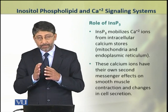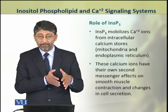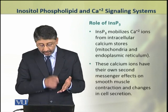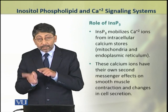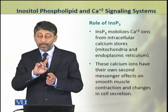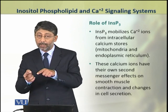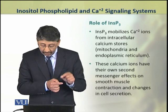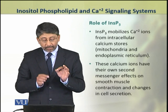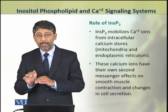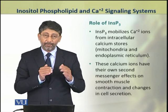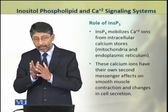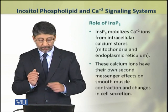As a result, the calcium ion concentration in the cell is increased. These calcium ions act as second messengers. Inositol trisphosphate is itself a second messenger, and it has activated another second messenger — the calcium ions — which act on smooth muscle contraction and cause changes in cell secretions.